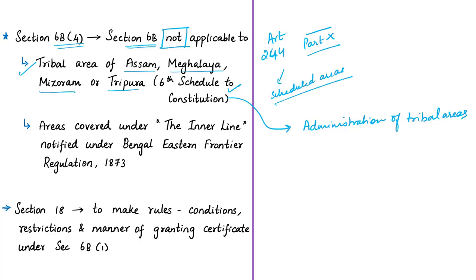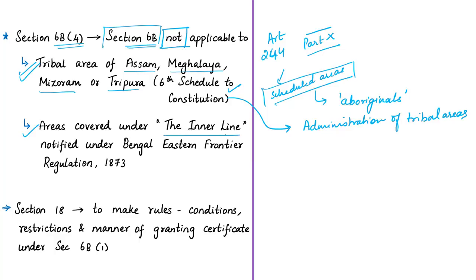These scheduled areas are treated differently because they are inhabited by aboriginals — natives who are socially and economically backward — so special efforts are needed to improve their condition. Therefore, the normal administrative machinery of a state is not fully extended to these areas, and the central government has greater responsibility. Based on the Sixth Schedule, Section 6B will also not apply to areas covered under the inner line notified under the Bengal Eastern Frontier Regulation of 1873.